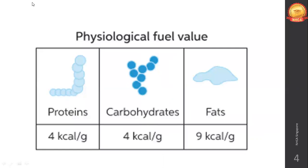Next is physiological fuel value. There is a difference between physiological and actual fuel value of proteins, carbohydrates, and fat. If you metabolize and break down these macronutrients outside the human body — in a simulated laboratory condition using a calorimeter — the values will be slightly different compared to what actually takes place within the body. Refer to Table 7.3 on page 132 in your textbook.